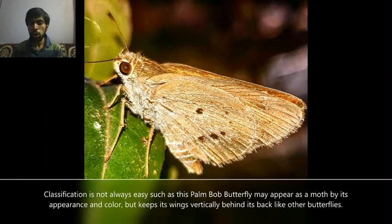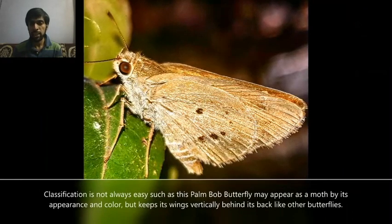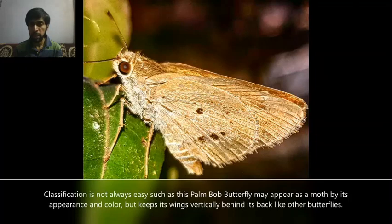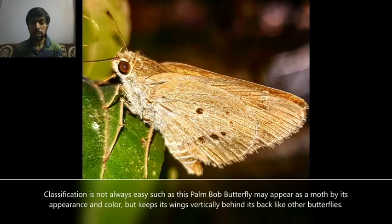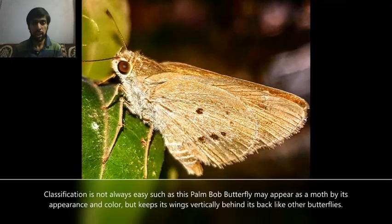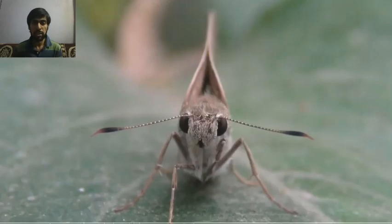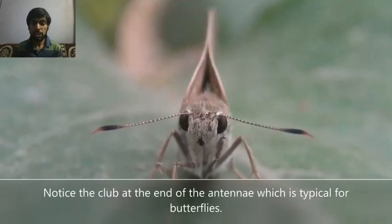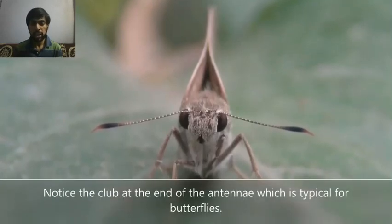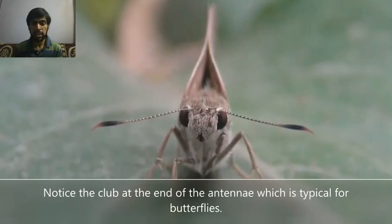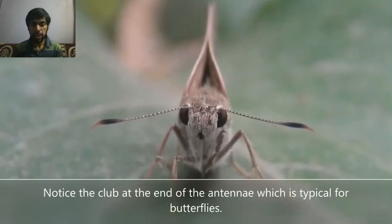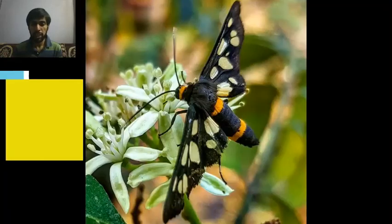Classification is not always easy. This palm bop appears like a moth but is actually a butterfly. They also have a club at the end of the antenna, which is typical of butterflies.